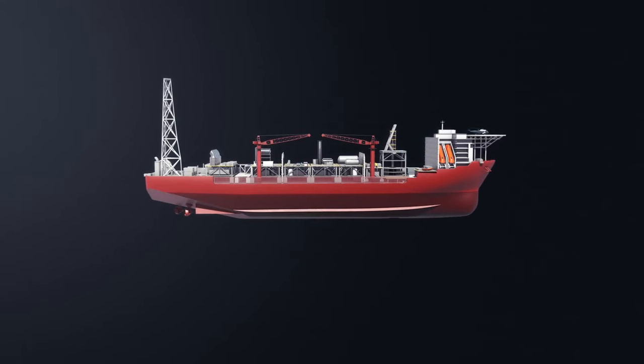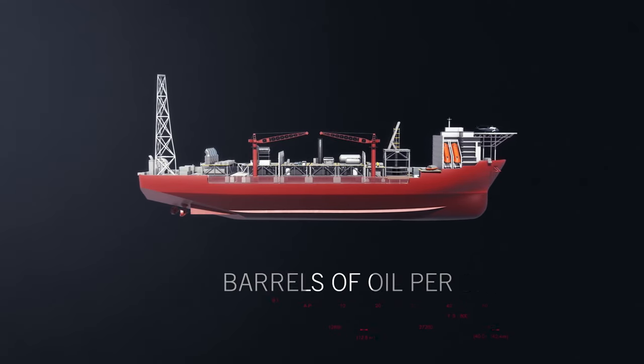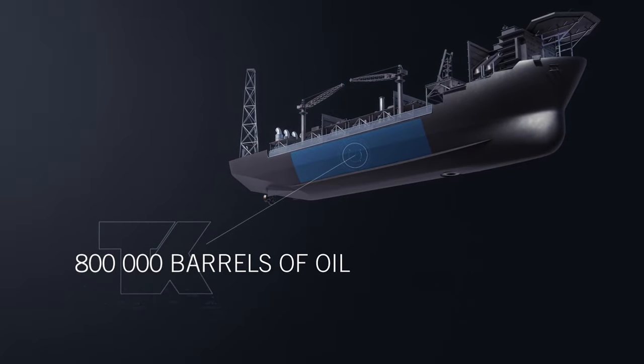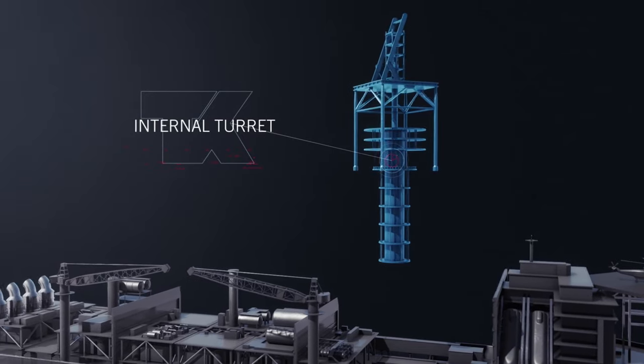Petriyal Kanaar will be able to produce 63,000 barrels of oil per day and have the storage capacity of more than 800,000 barrels of oil. The internal turret and swivel system is the heart of the Petriyal Kanaar.